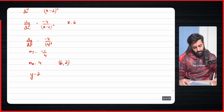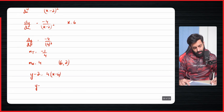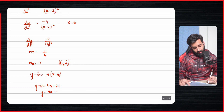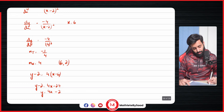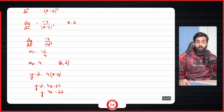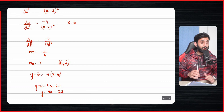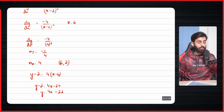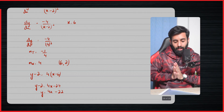So y minus two equals four into (x minus six), which means y minus two equals four x minus twenty-four. Making y the subject: y equals four x minus twenty-four plus two, which is four x minus twenty-two. That is the final correct answer.